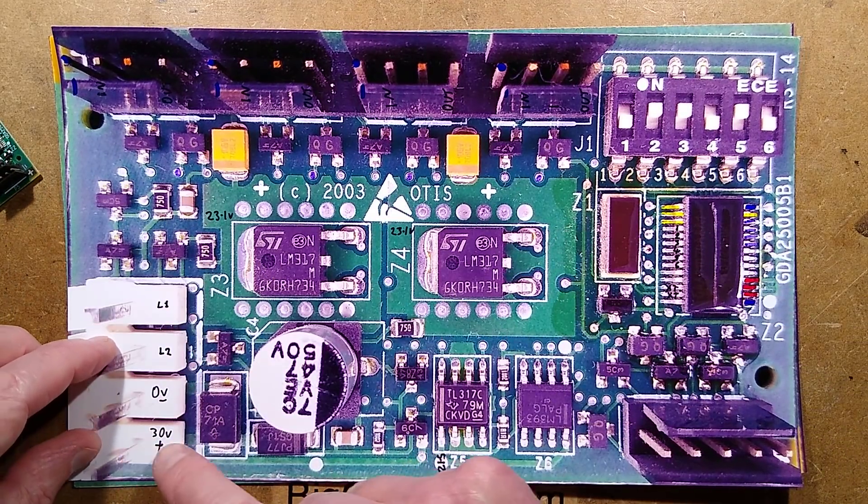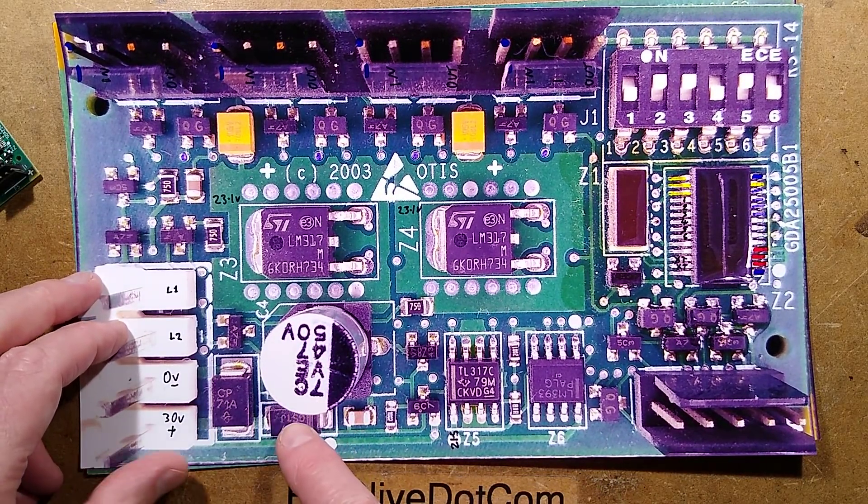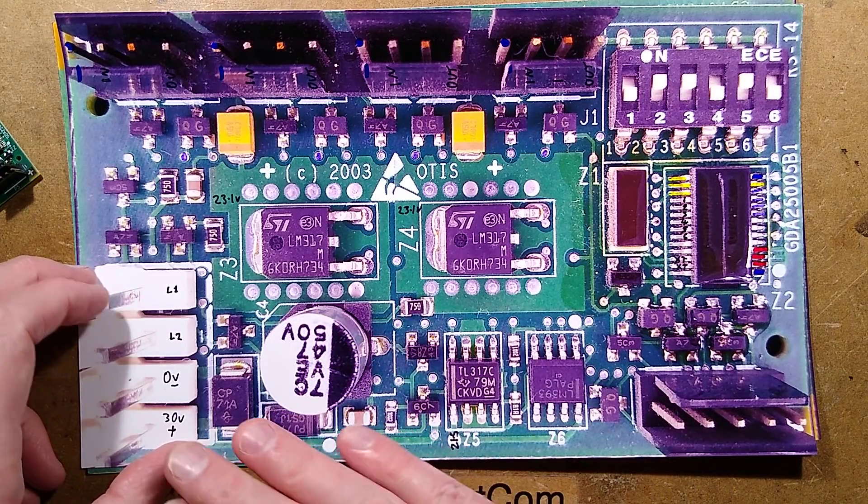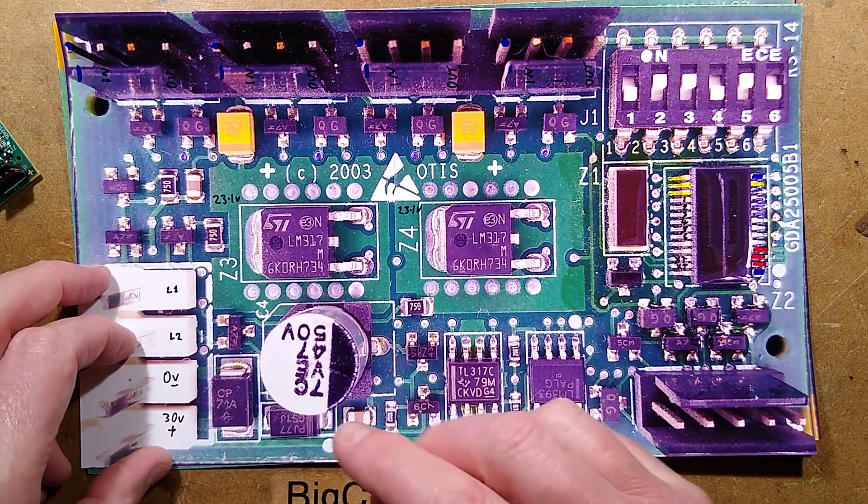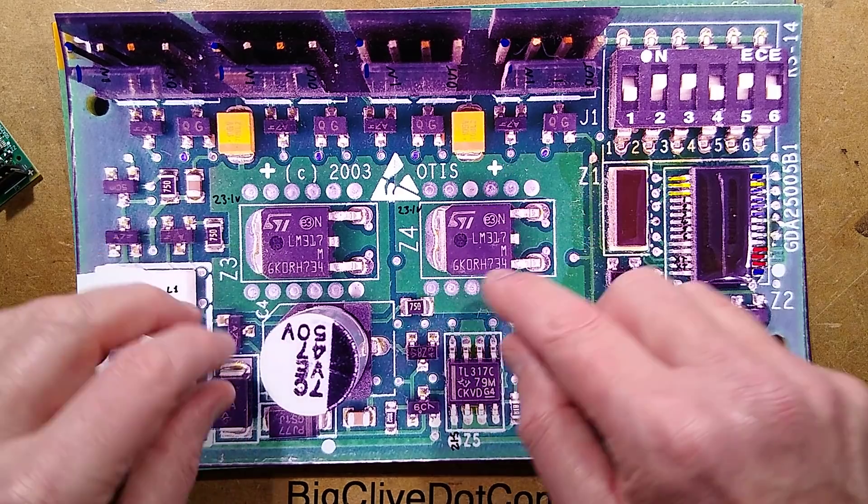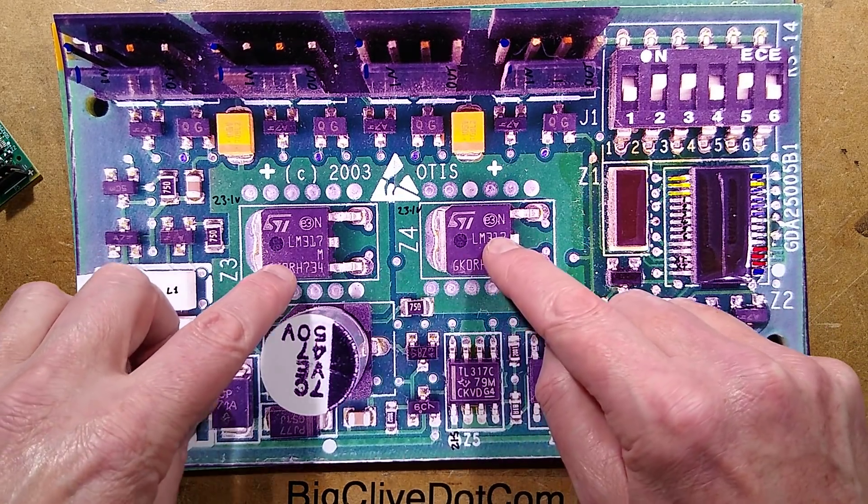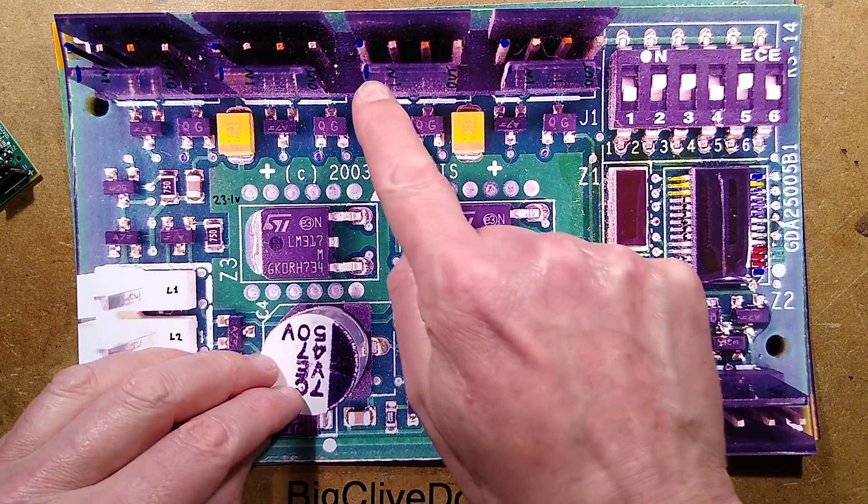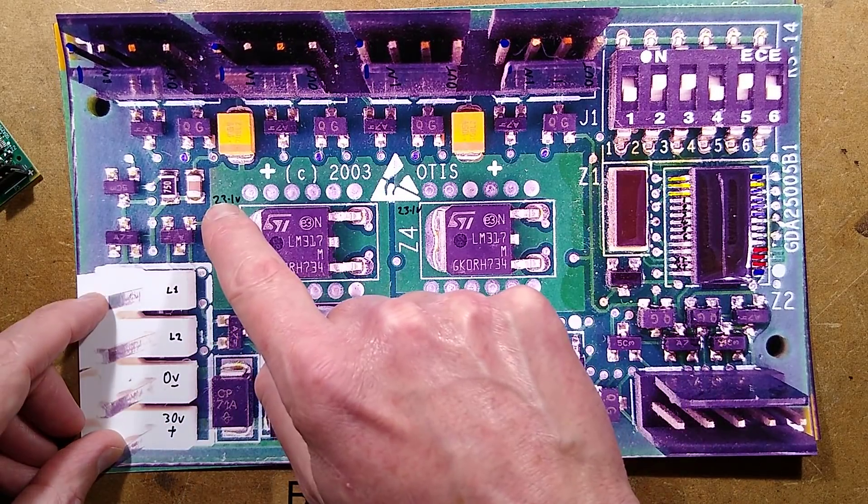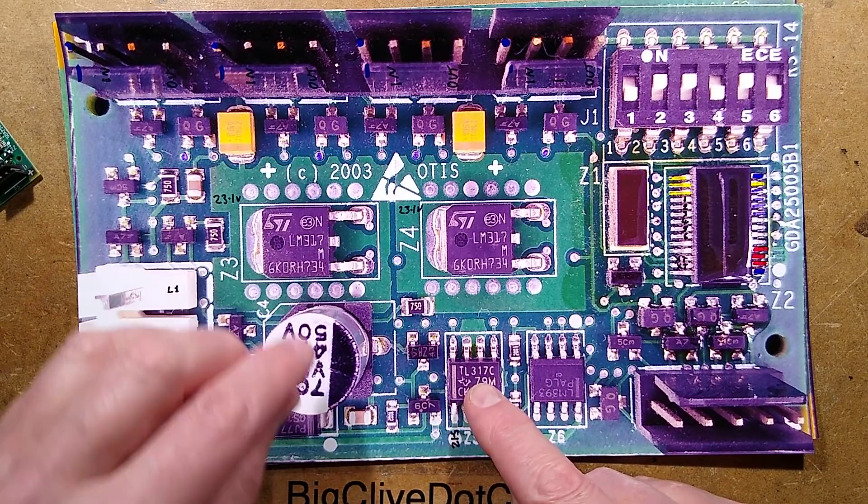The supply comes in at 30 volts. There's a transient suppression diode here, a polarity protection diode here, and the electrolytic capacitor provides a stable local supply. That's used to generate two 23 volt supplies. I'd guess the standard is probably 24 volt but they've nudged them down by 1 volt. They've split the load between two regulators.